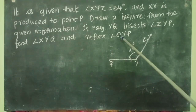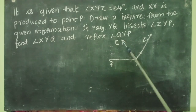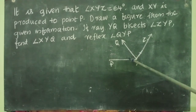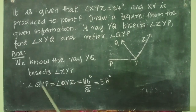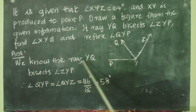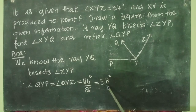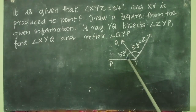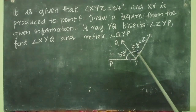Now we know there is a ray YQ in between them which is dividing angle ZYP into two equal parts. Angle ZYP is 116 degrees. What is the measurement of each angle? It will be 116 degrees divided by 2. We know that ray YQ bisects angle ZYP, therefore angle QYP equals angle QYZ equals 116 divided by 2, that is equal to 58 degrees. So angle QYP equals 58 degrees and angle QYZ also equals 58 degrees. The total is 116 degrees.